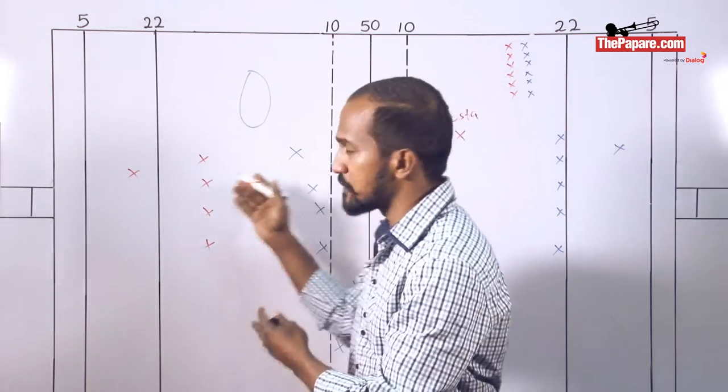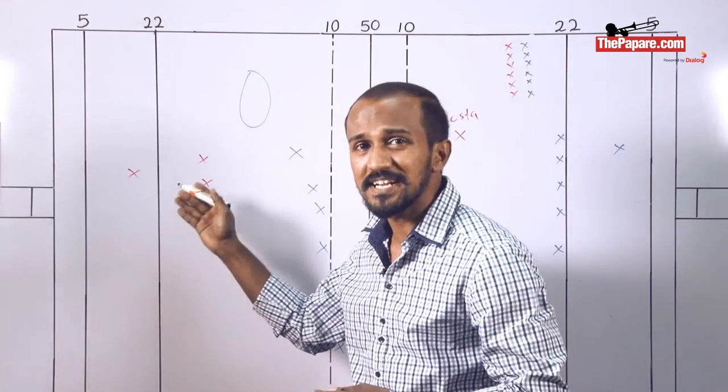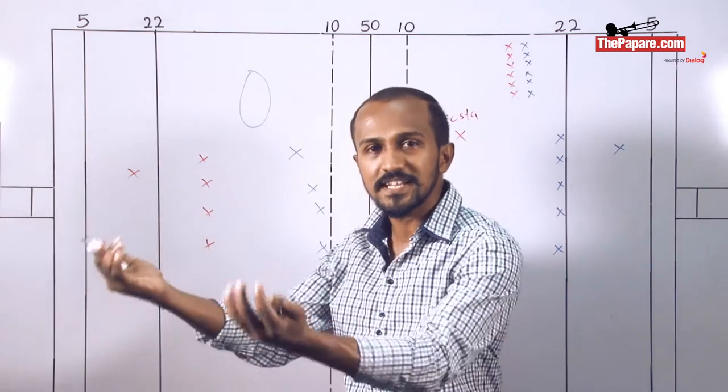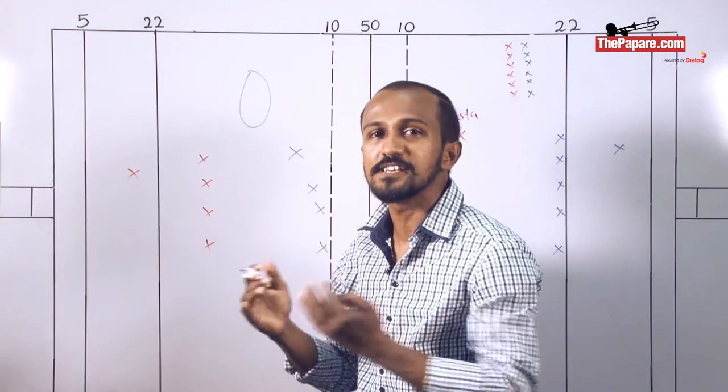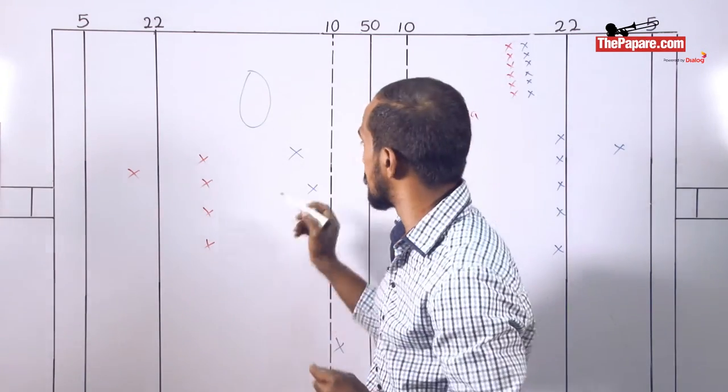Every time Navy came into the opposite half, probably in the first half Navy came into the opposite half more than 10 times into the opposite 22 meter. But Air Force, it's pretty much like they are inviting Navy and they know there's going to be a mistake and they are ready for the counter attack. That's why they led at half time 5 points to 3.